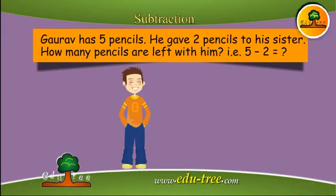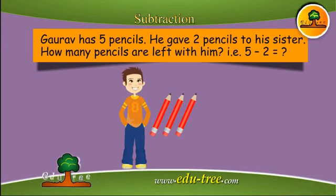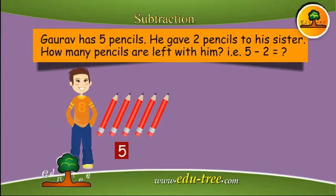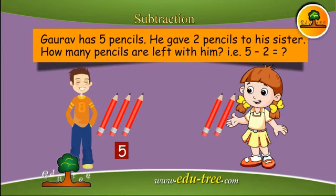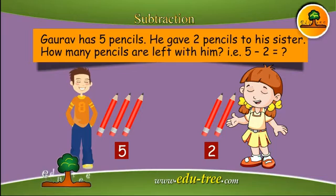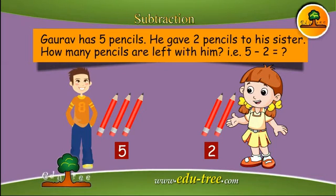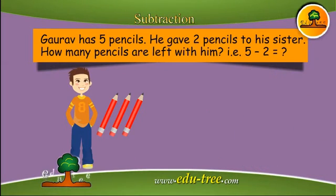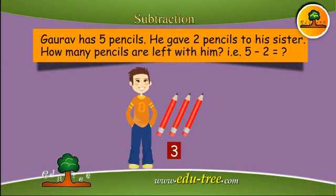Let us understand more about take away. Gaurav has five pencils. He gave two pencils to his sister. How many pencils are left with him? That is five minus two. The answer is three.